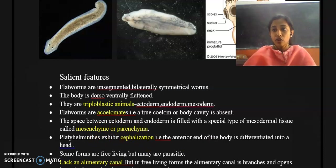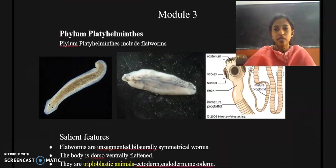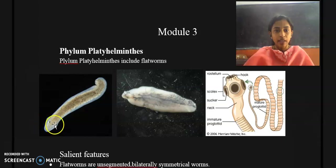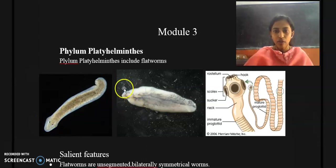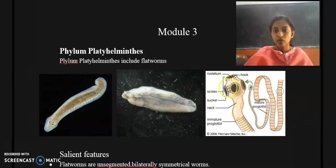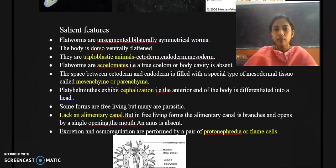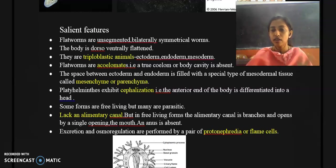Another unique feature is that Platyhelminthes possess cephalization. Cephalization means the existence of a prominent head region at the anterior portion. In Planaria, at the anterior tip you can find a distinct head region. In Fasciola also there is a head region. In Taenia solium the anterior portion is called the scolex, which is the head part. Members of phylum Platyhelminthes exhibit cephalization — the anterior end is differentiated into a distinct head.